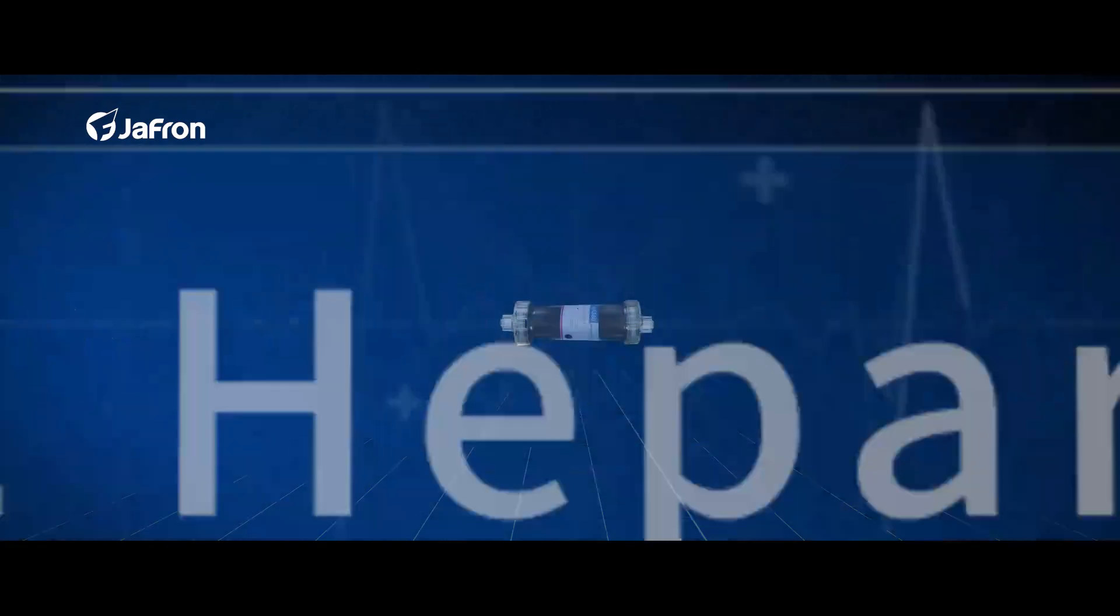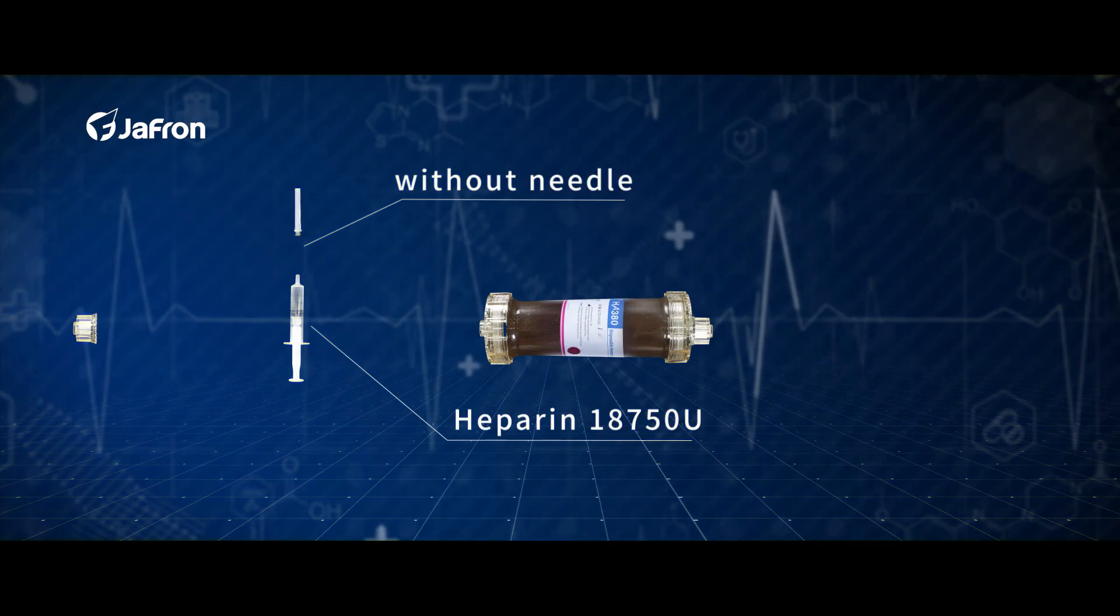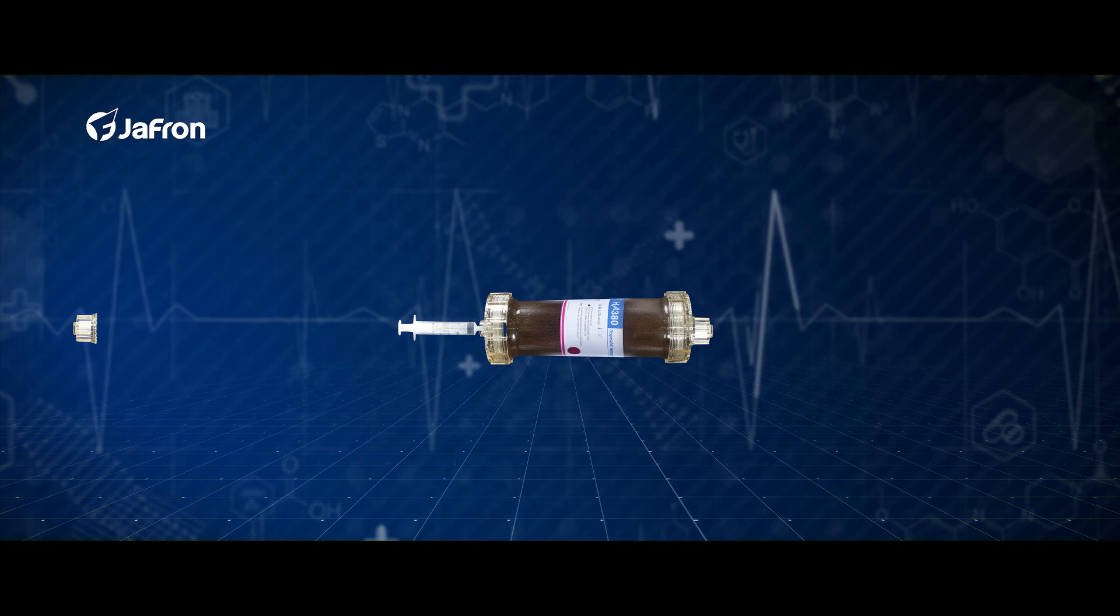Part 2: Heparinization. Unscrew one cap of the cartridge. Use a 5ml syringe without needle to inject 18,750 units of heparin into the cartridge.